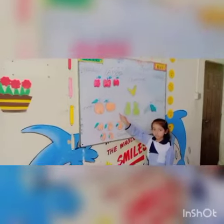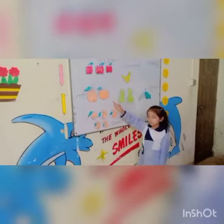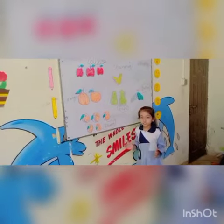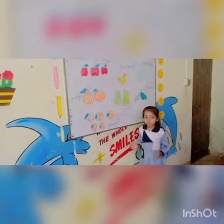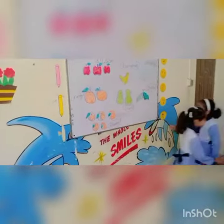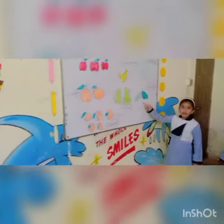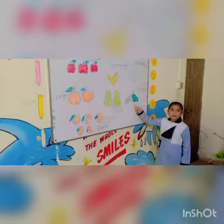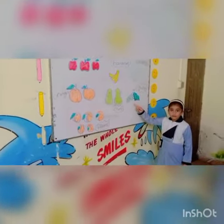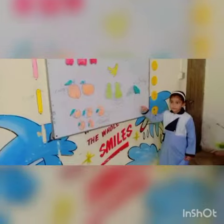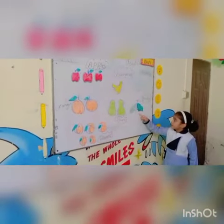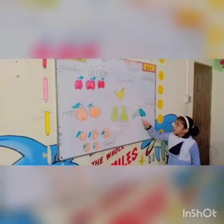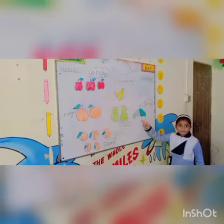Let's start. The oranges are big, okay. And the grapes are small, okay. Tell me, what is the color of grapes? The grapes are green. Good.